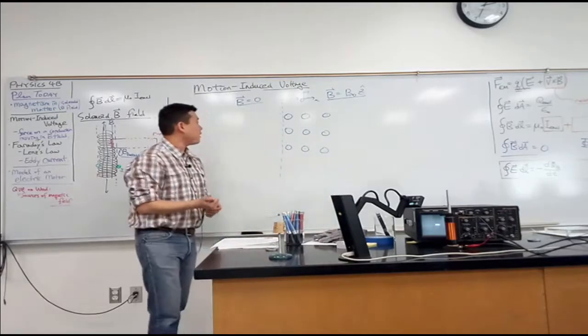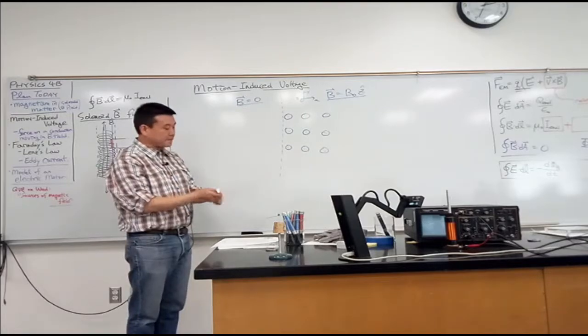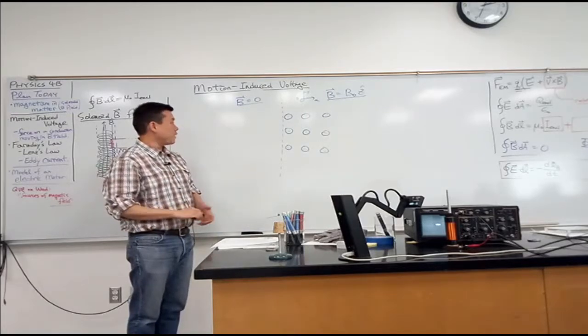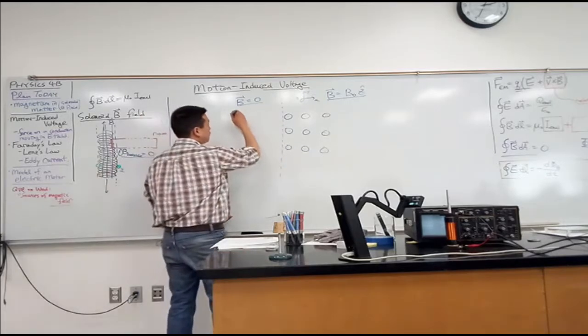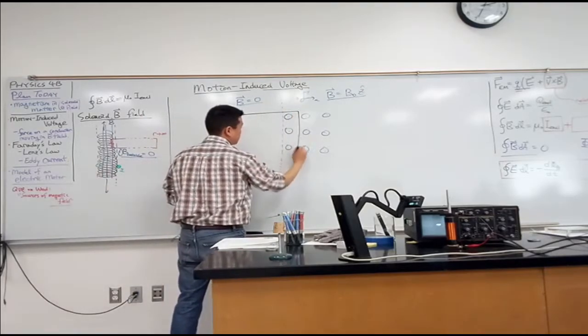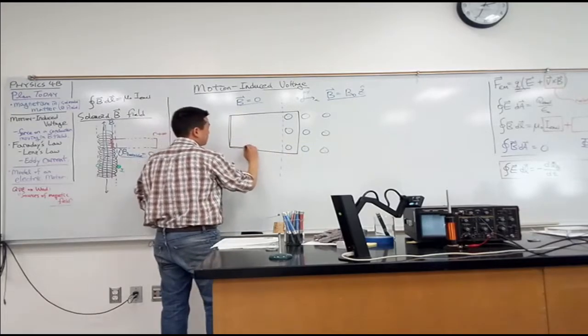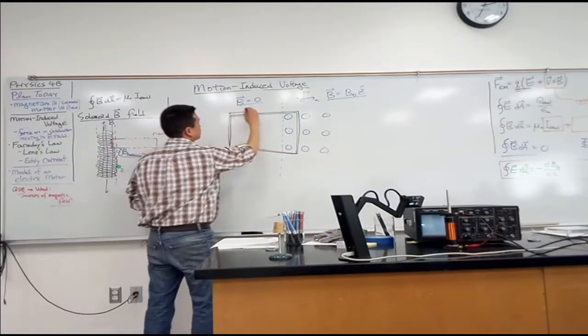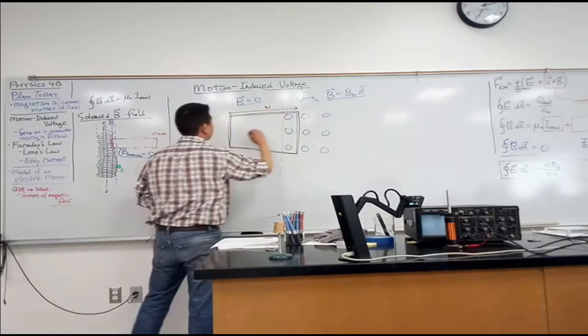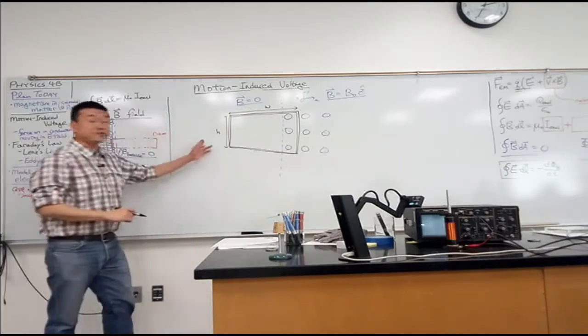So this is what I want you to imagine. Imagine that I have a conducting loop of a square shape or rectangular shape. Let's say I have a conducting loop that's of some width W, and of some height H.